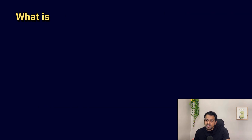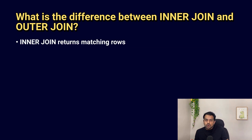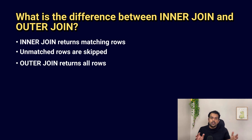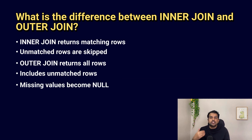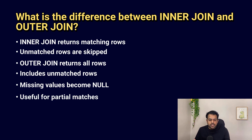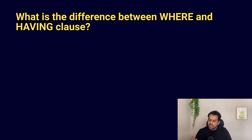The next question is: what is the difference between INNER JOIN and OUTER JOIN? Inner join returns only the matching rows from both tables — if there are no matches, the row is skipped. Outer join returns all rows from one or both tables even if there are no matches, filling missing values with NULL. Outer join is useful when you need unmatched data as well.